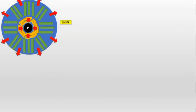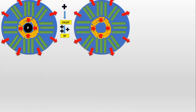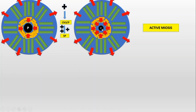Cranial nerve 3 carries parasympathetic nerves and supplies the sphincter pupillae. When there is stimulation of cranial nerve 3 or the parasympathetic fibers, there is additional stimulation of the sphincter pupillae muscles. There is more force trying to make the pupil small, so the pupil gets small. This is called active miosis, because the sphincter pupillae muscle is actively stimulated causing the pupil to become small.